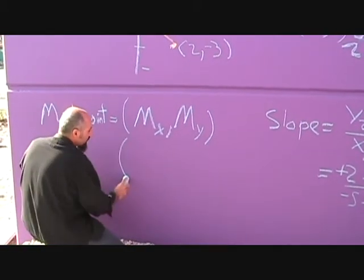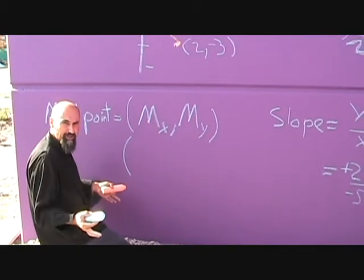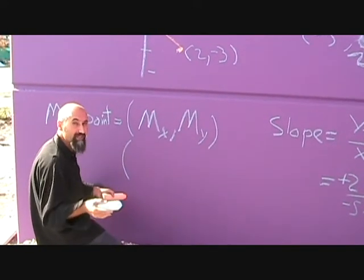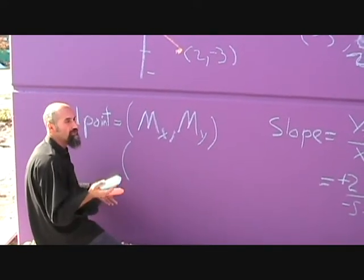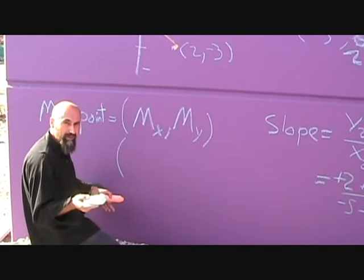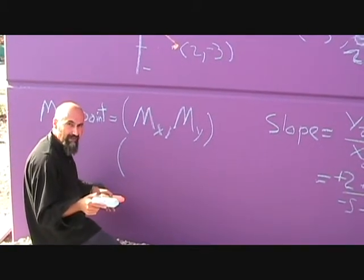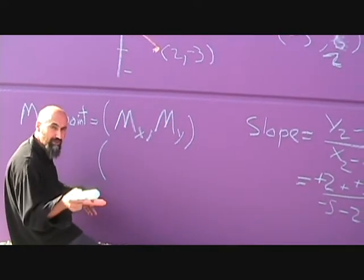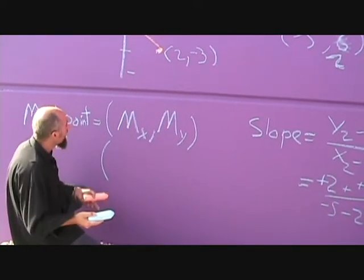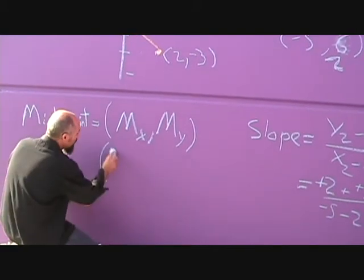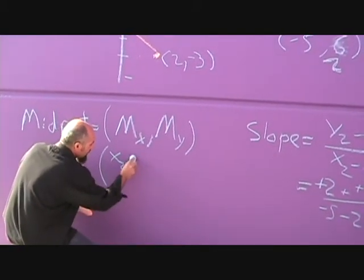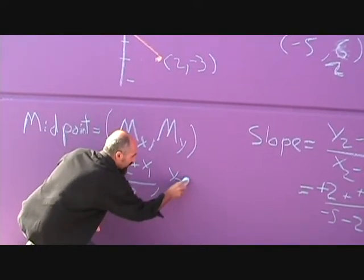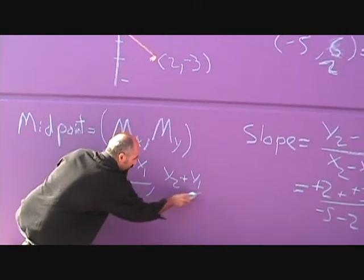The midpoint of the x's is basically the average. You're going x1 plus x2 divided by 2. Think about what's an average - what's the number between 10 and 20? The number between 10 and 20 is 15, and the way you get that you go 10 plus 20 and divide by 2. So 10 plus 20 is 30 divided by 2 is 15, and that's exactly the same thing you're doing over here. You go x2 plus x1 over 2 and y2 plus y1 over 2.